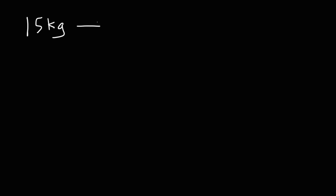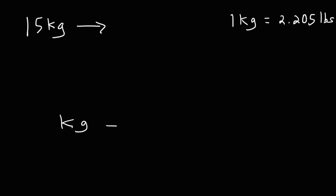Let's say we have 15 kilograms. How can we convert this number into pounds? The conversion factor that you need is this: one kilogram is equal to 2.205 pounds. So anytime you wish to go from kilograms to pounds, all you need to do is multiply the number by 2.205.